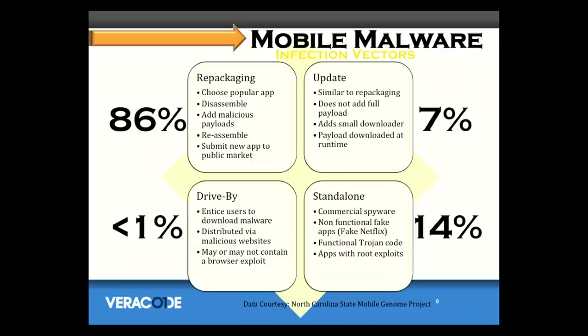There's another technique called update, which is very similar to repackaging, but you don't put the malicious code directly in. Instead you put in a small update mechanism — you decompile, insert the update mechanism, recompile it — and when the app is running, it pulls down the malware onto the device. By far the majority of mobile malware uses those two techniques.